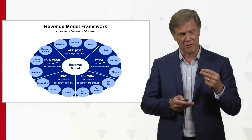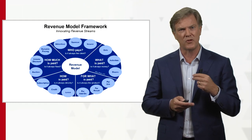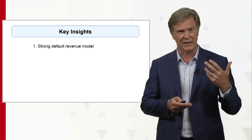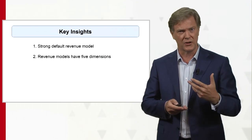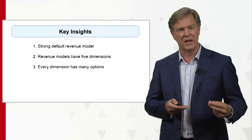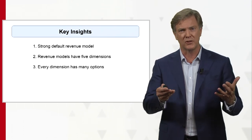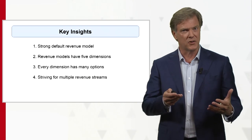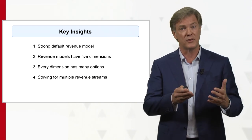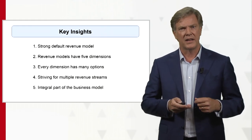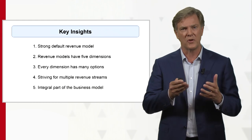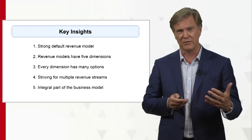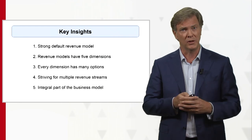So, five different dimensions along which to think about your revenue model. The takeaways from this Revenue Model Framework: first, realize how strong the default revenue model is that you have in your mind — and challenge it. Use these five dimensions to challenge your own default model. For each one of the five dimensions I've given you three examples, but there are more potential opportunities. Also, there's not only one revenue stream you might be interested in — try to organize various revenue streams at the same time. And finally, realize that a business model is made up of various parts, and the revenue model is an integral section of that business model, so it's very important to also challenge the revenue model itself. Hopefully a useful tool — I hope to see you again next month.